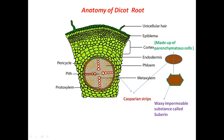The casparian strips are impermeable to water and don't allow the passage of water between them. So when roots absorb water and it must travel from the cortex to the xylem, it cannot pass through the casparian strips. For this reason, there are some cells in the endodermis that don't have casparian strips — marked here in blue — and these are called passage cells. Water travels from these passage cells to the xylem.